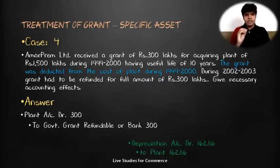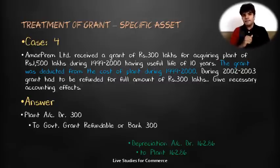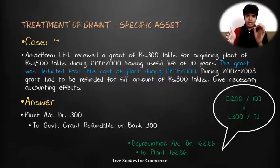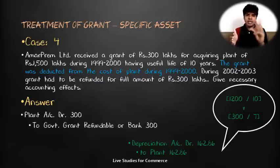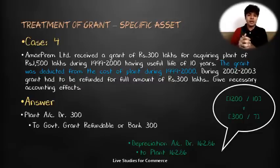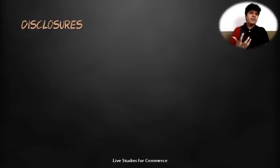The most important point now is how to calculate depreciation after the asset value is revised. Previously, depreciation was ₹1,200 lakh ÷ 10 = ₹120 lakh per year. After the grant refund in 2002-2003, ₹300 lakh is added and 7 years of useful life remain (1999-2000 to 2002-2003 is 3 years elapsed, leaving 7 years). So new depreciation = (existing book value + ₹300) ÷ 7 + ₹120 = ₹162.86 lakh per year, charged prospectively over the residual useful life.